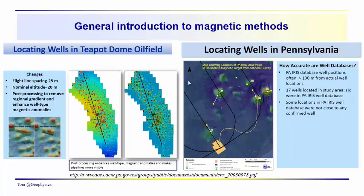We're going to jump into a discussion of magnetic methods now and jump right into some interpretation. What we see over here to the right is an old field in Wyoming — the Teapot Dome Field. The wells in this field have been drilled beginning back in the early 1900s, so their locations are well known. The magnetic survey done over here — this is an airborne survey — demonstrates that the magnetic field can be used to identify well locations in this area quite well.